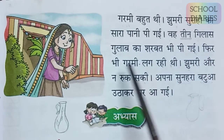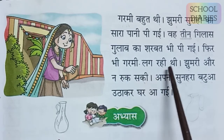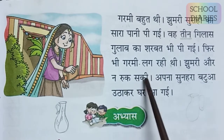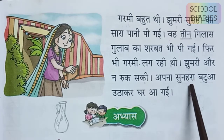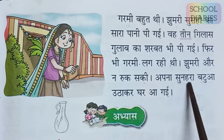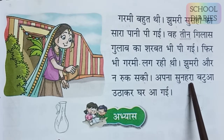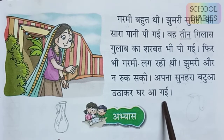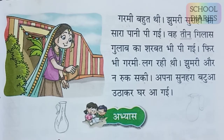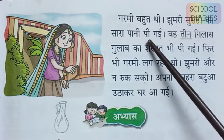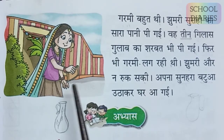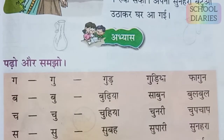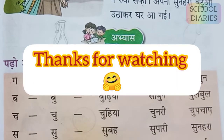Fir bhi garmi lag rahi thi — even then she was still feeling very hot. Jhumari aur na ruk saki — she couldn't tolerate any more. Apna sunahara batwa utha kar ghar a gayi — sunahara means golden and batwa means purse, so she picked up her golden purse and came back home from the wedding. She wanted to enjoy the wedding but the heat was too much, so finally she went home. This is a small lesson about the girl Jhumari.